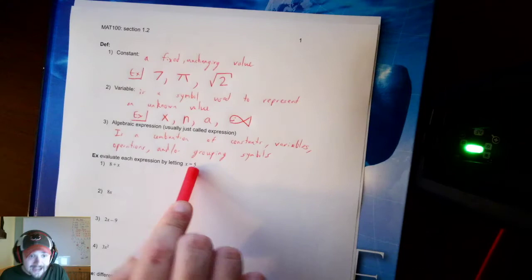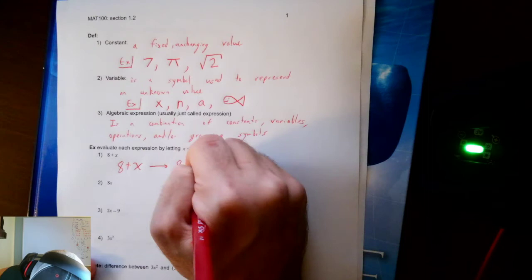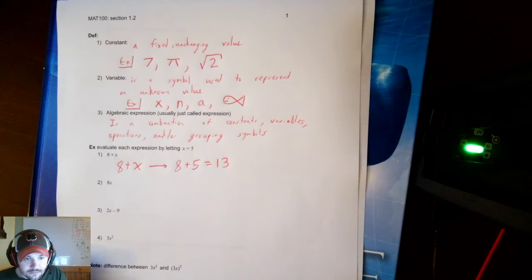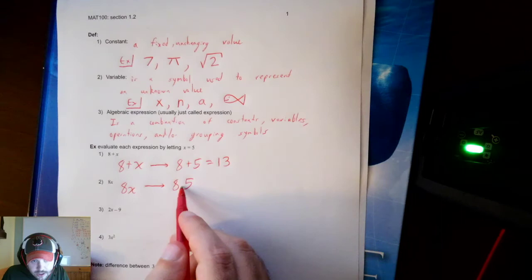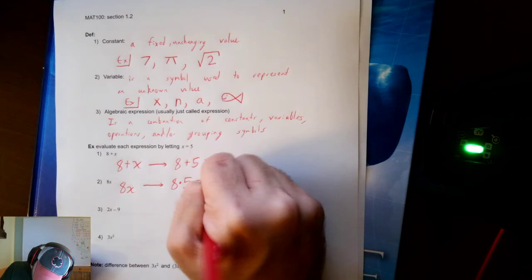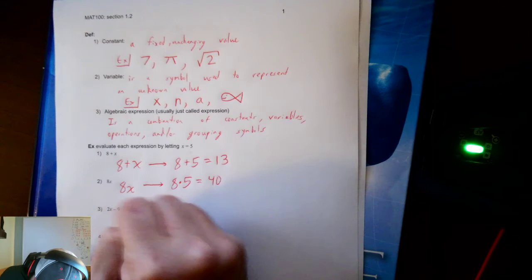So let's take a look. Evaluate each expression by letting x equal five. When we evaluate, we plug in. So I have 8 plus x. That is going to become 8 plus 5 when I plug in 5. X becomes 5, and hopefully we all know 8 plus 5 is 13. Now how about this next one? 8x. When I plug in the 5, what operation goes here? Hopefully everyone had the idea that it's multiplication. 8 times 5 is 40.